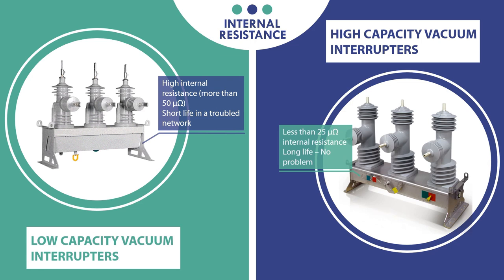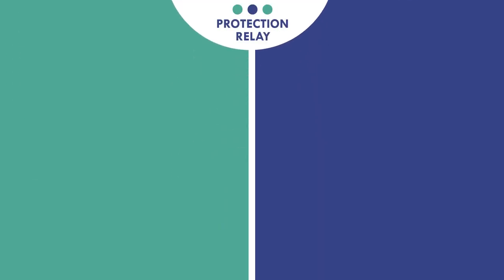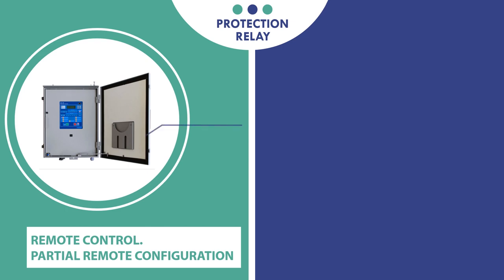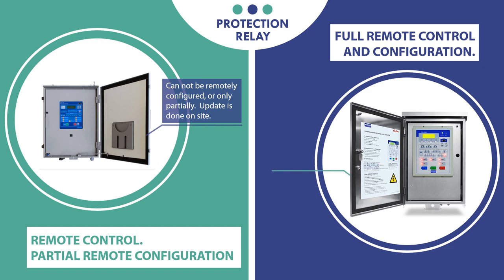We continue to the next very important factor in reclosers: control device or protection relay. Majority of manufacturers provide remote control and non or only partial remote configuration. In order to perform update of operational data or firmware, the service engineer needs to do it locally and go to the pole site. Hughes supplies protection relay which has full remote control, complete remote configuration, and firmware update. The protection relay engineer can manage all installations and updates from his office remotely.